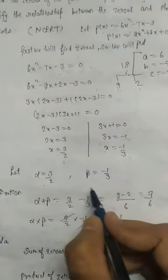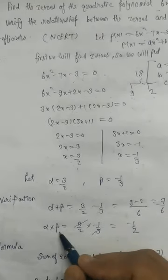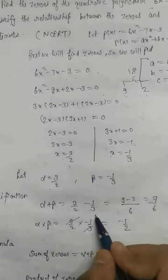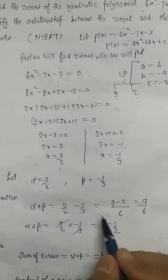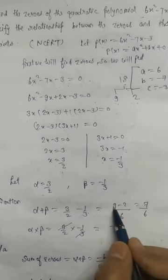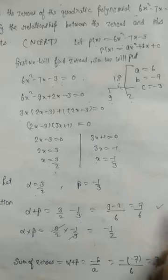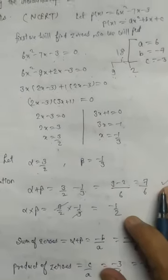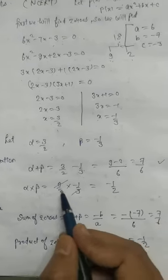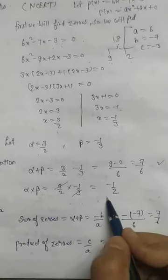Alpha = 3/2 and beta = −1/3. Directly: alpha + beta = 3/2 + (−1/3). The LCM of 2 and 3 is 6, so it becomes 9/6 − 2/6 = 7/6. And alpha × beta = (3/2) × (−1/3) = −1/2.